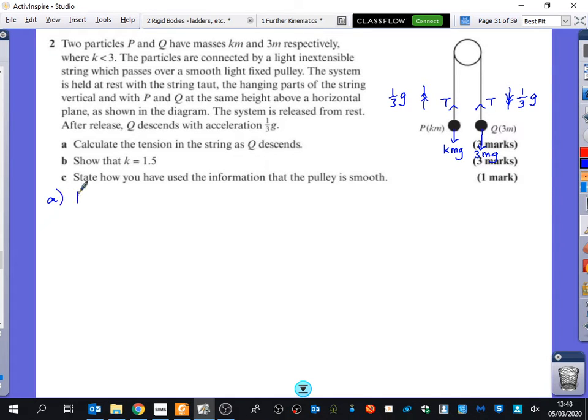So I'm going to resolve in which direction, up or down? Down. Down, it's the direction it's moving in. I'm going to do F equals ma, and I'm going to be looking at particle Q. What is the resultant force? 3MG minus T equals, what's the mass? 3M and the acceleration? 1 third G. So I'm going to multiply that by a third G.